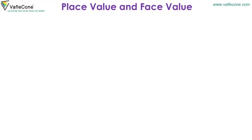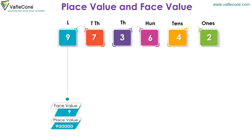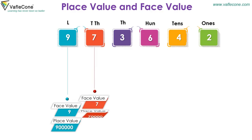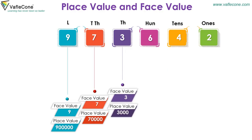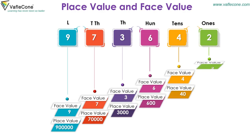Place value and face value for 9,73,642: For 9, face value is 9 and place value is 9 lakh. For 7, face value is 7 and place value is 70,000. For 3, face value is 3 and place value is 3,000. For 6, face value is 6 and place value is 600. For 4, face value is 4 and place value is 40. For 2, face value is 2 and place value is 2.